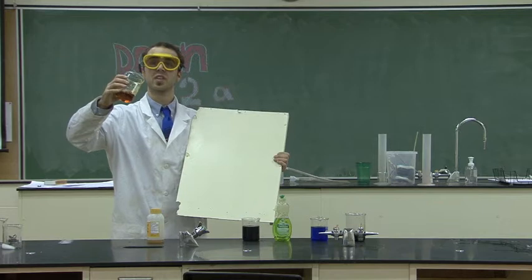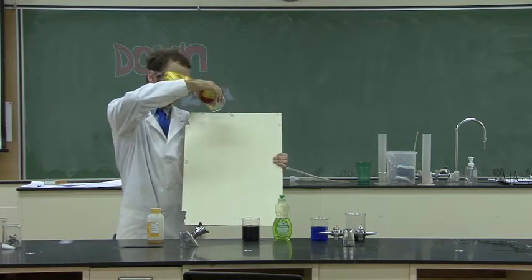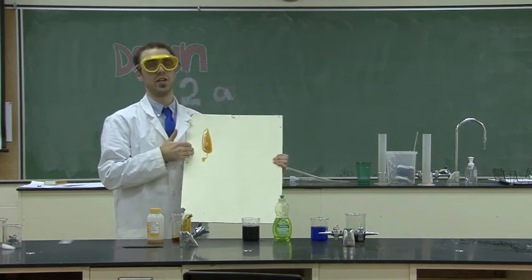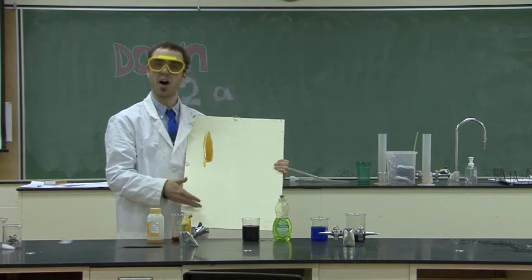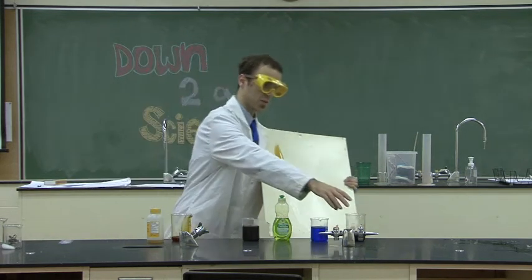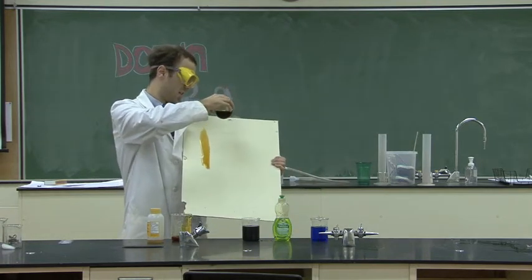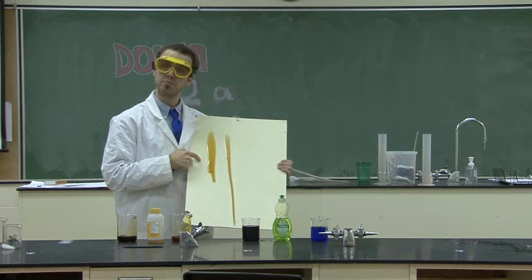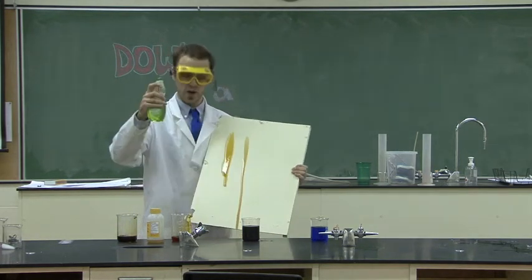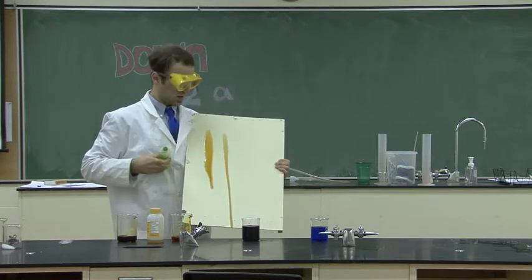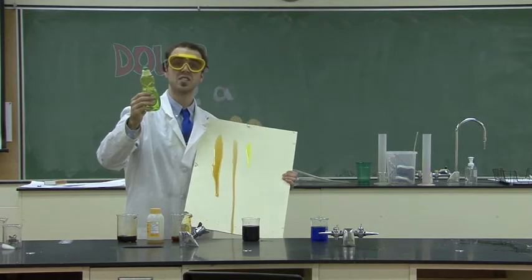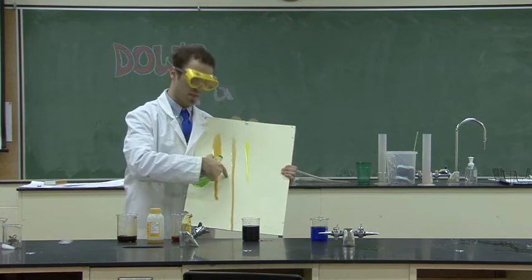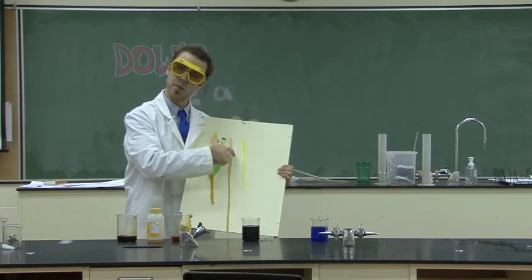Here, I have some syrup. This has a high viscosity — a high resistance to flow. As you can see, it takes a really long time to get from the top to the bottom of the board, so it has high viscosity. Let's also take a look at the oil. This has a high viscosity, but it's not quite as high as the maple syrup. Let's take a look at some regular dish soap. Although viscous, the dish soap has a higher viscosity than the oil, because it's taking longer for it to get from the top to the bottom of the board.